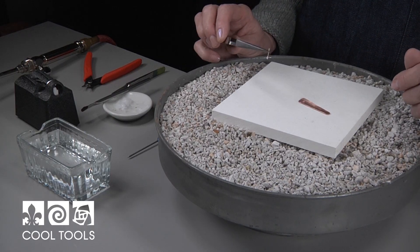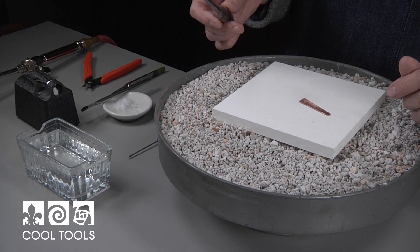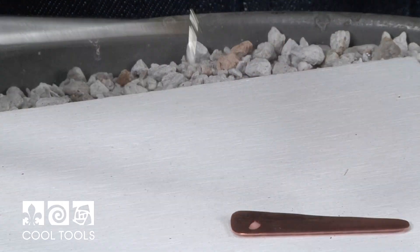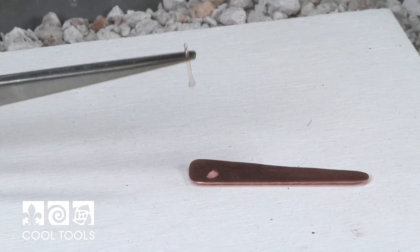I like to use a cross lock tweezer because it will hang on to my post. It also adds a little protection to the very tiny tip of this wire. It acts as a heat sink.